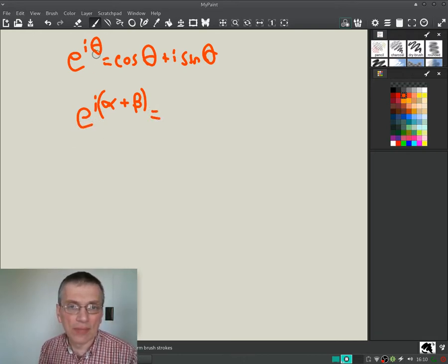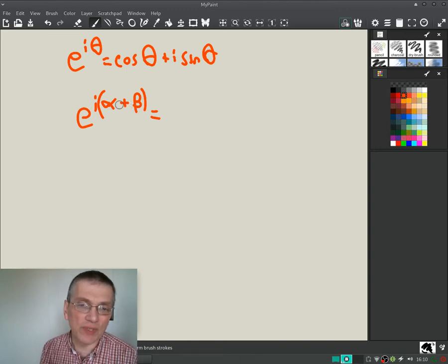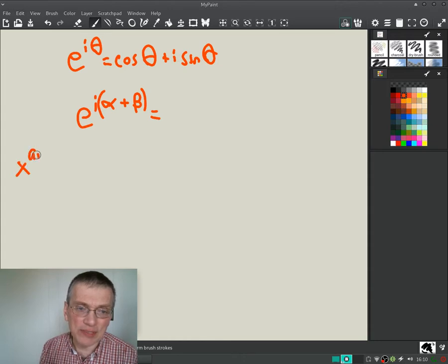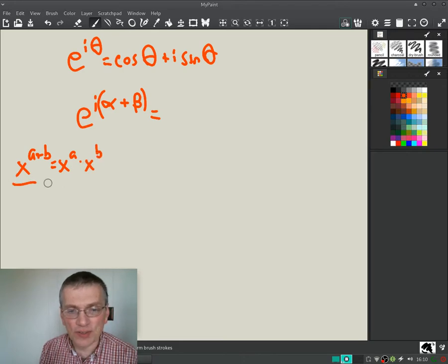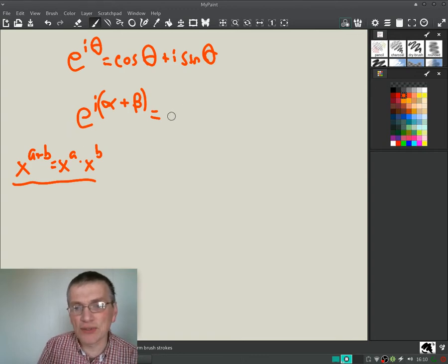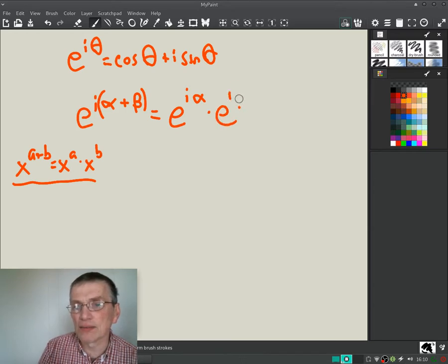Well, here, instead of using theta, we use alpha plus beta, and we'll use this to try and get our formula. Well, now this turns into an exponential function. And if you have something x to the a plus b, it's the same as x to the a times x to the b, right? You know those from your working with exponents. It's the same thing here. This equals e to the i alpha times e to the i beta.